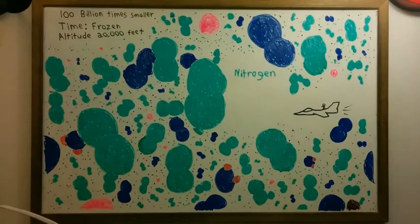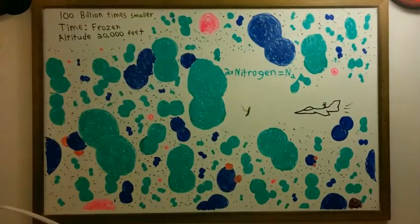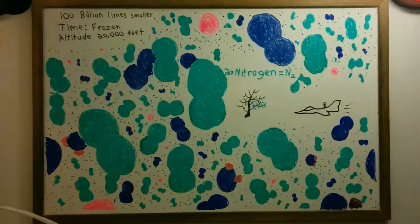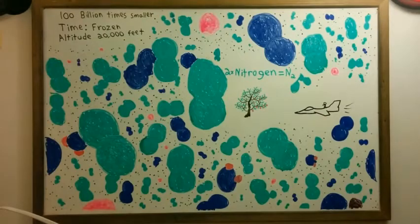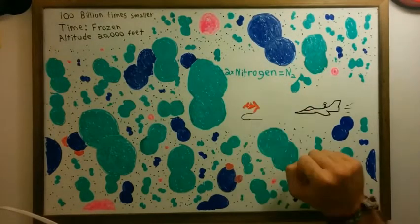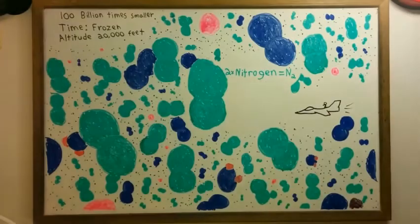This is nitrogen — N2, two atoms stuck together. Figuring out how to separate these two is probably one of the most important discoveries of mankind, because it enabled us to efficiently create food for plants. Without this fertilizer, we wouldn't be able to feed about half of all the world's population. But nitrogen can also take life, as it is one of the main ingredients in explosives like TNT and dynamite.